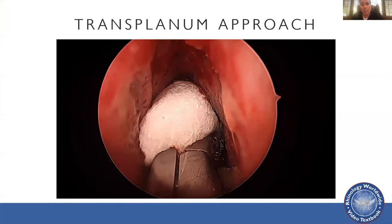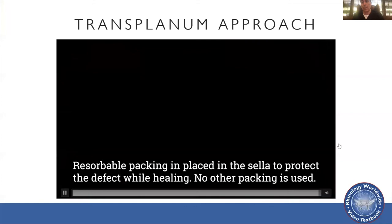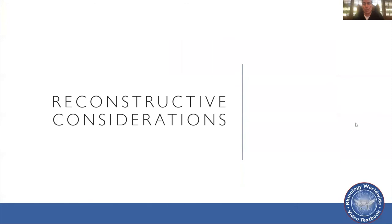We don't use any heavy packing like balloons or gaskets to secure the graft. The biggest reason for failure of high-flow leaks is graft migration, and the bilayer button, based on its ability to be tethered to itself, keeps it from moving in both the horizontal and vertical directions.